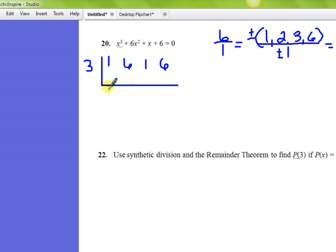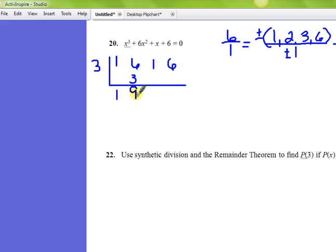And I'm going to drop down the one, and one times three is three, that gives me nine, and that gives me 27. I'm pretty sure that I'm not going to get a zero out of that because there's no negatives up here.